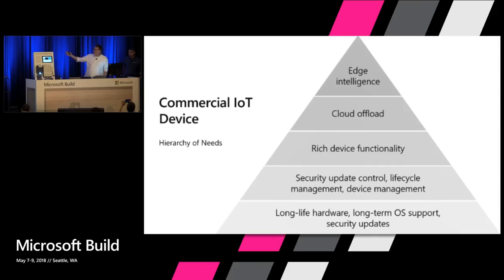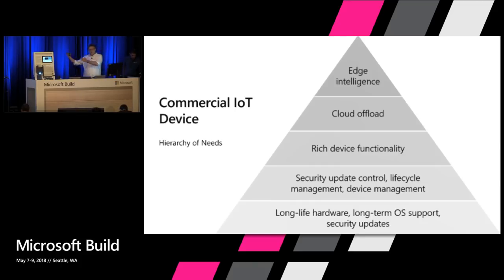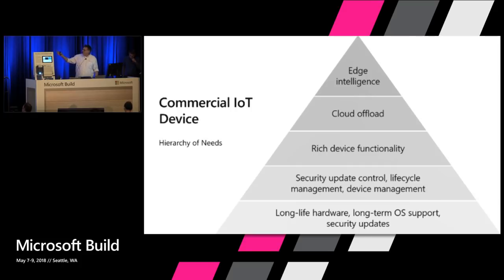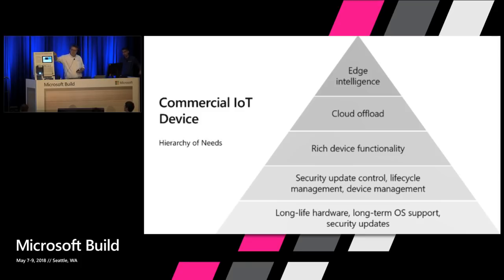As a commercial IoT device maker, when I go to make a device, I have what we call a hierarchy of needs — based on the psychological hierarchy of needs. I need a place to sleep before I worry about getting that next promotion. We have to get the fundamentals right, then work up to the reasons we all do this and make a commercial IoT device. I'll walk through each one, give a demo along the way, and finish with a demo on how Windows IoT can be used for edge intelligence in an industrial setting, showing off the Windows AI platform on Windows IoT using Azure ML.